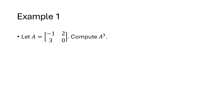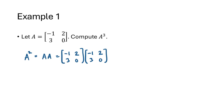Let's look at a quick example. We have a 2 by 2 matrix A equal to [−1, 2; 3, 0], and we're asked to compute A cubed, which means A multiplied by itself three times. Before we can do that, we first compute A times A. Using the standard row-by-column process — or technology if you'd like — we get A squared equals [7, −2; −3, 6].